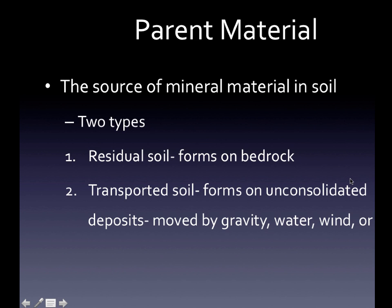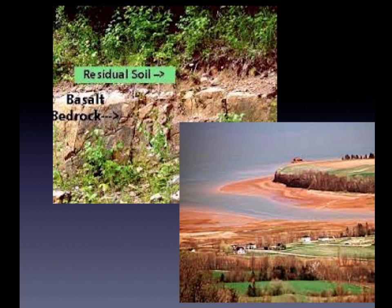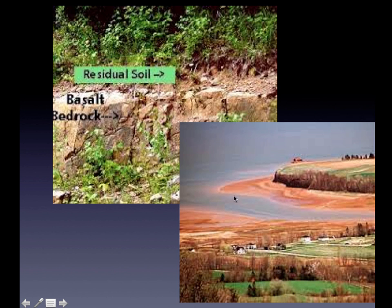Transported soil forms on unconsolidated deposits — unconsolidated just means they're still all jumbly and haven't turned into soil yet. If we look at this picture, we've got our basalt bedrock as part of the regolith, not the soil, and on top we've got this residual soil that came directly from the bedrock. On the other hand, in this other picture, we have all of this lovely soil on the edges of a delta. This soil comes from down the river — as the river flows, soil and rocks are eroded and deposited down here. This soil down here isn't going to closely resemble the rock it started from, because it's getting so weathered and picking up so many other things as it goes.